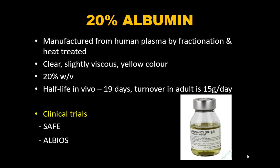20% Albumin is manufactured from human plasma by fractionation and heat treatment. It is a clear, slightly viscous, yellowish fluid. In-vivo half-life is 19 days with a turnover of 15 g/day in adults. The SAFE trial showed no mortality benefit using 4% albumin. The ALBIOS trial, which maintained plasma albumin at 30 g/L, also showed no mortality benefit — except in a subset of septic shock patients, where there was approximately 6.5% mortality benefit.